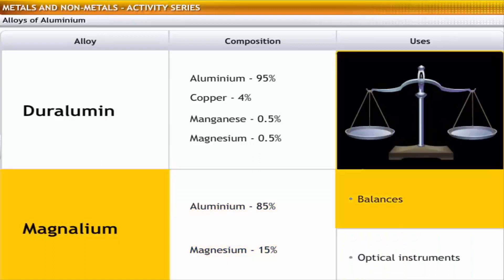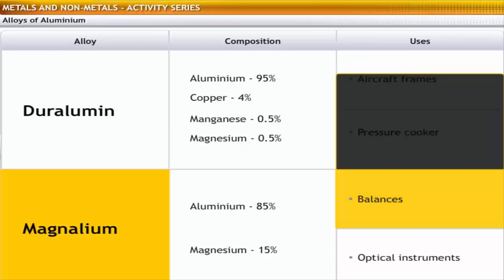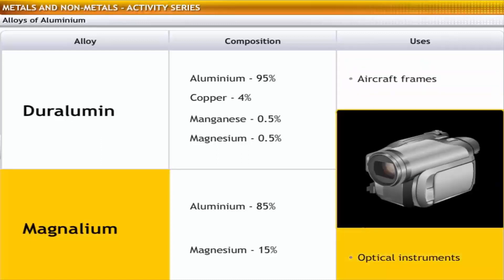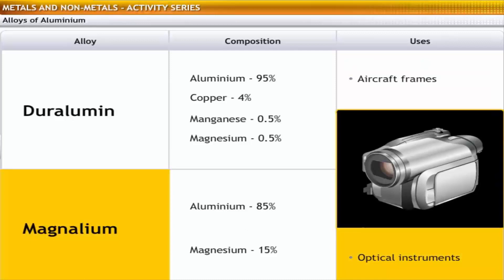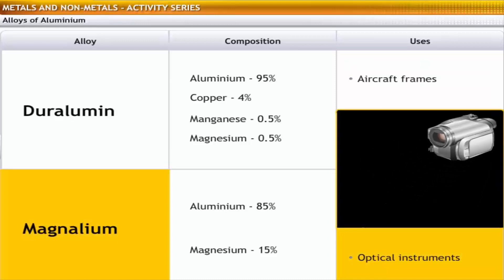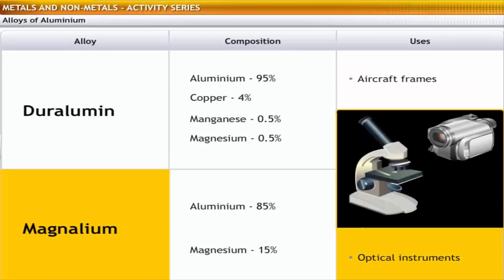Magnalium is used in the making of balances because of its high structural strength and resistance to corrosion. It is also used in the making of optical instruments like cameras and microscopes, due to its light weight and resistance to corrosion.